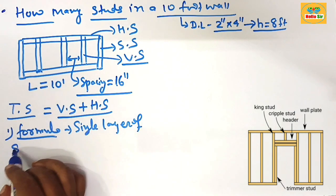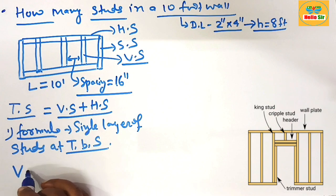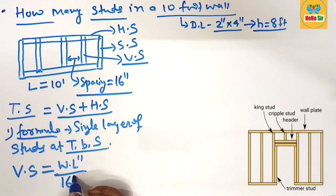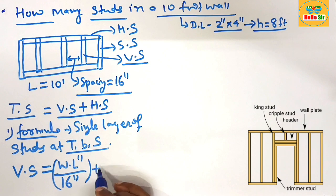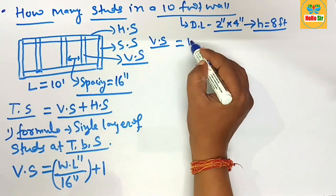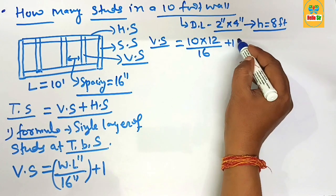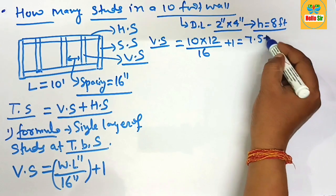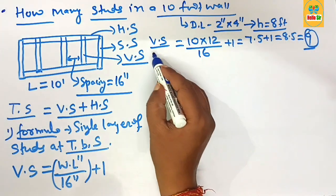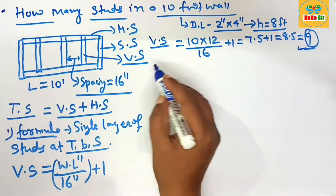The number of vertical studs equals wall length in inches divided by 16 inches, plus 1. The wall length is 10 feet multiplied by 12 to convert to inches, then divide by 16 and add 1. This gives 7.5 plus 1, which equals 8.5 — rounded up to 9 studs. So the total number of vertical studs required in a 10-foot wall is approximately 9 studs.